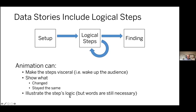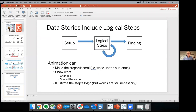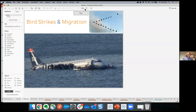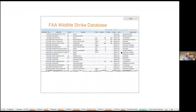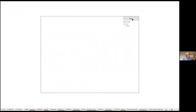Words are still absolutely essential in stories. What you should do is say what the logical step is, then animate and illustrate it, and sometimes it's best to say it again. I'm going to go back into Tableau and here's a little story I authored about how bird strikes and migration are related and why you should care. I'll skip the data description step since I already did that. Now I'm going to take advantage of the years-over-time and number-of-strikes view, and change the aggregation to the month level.